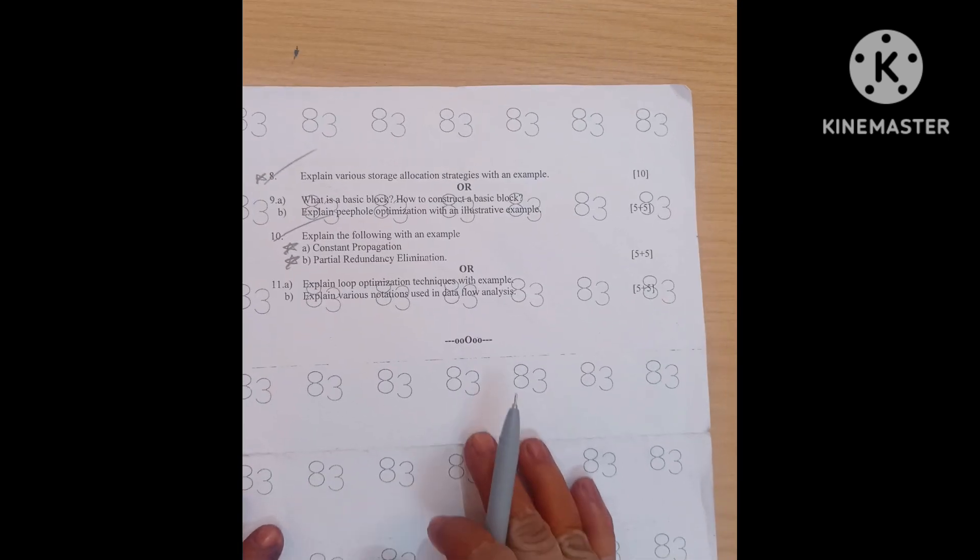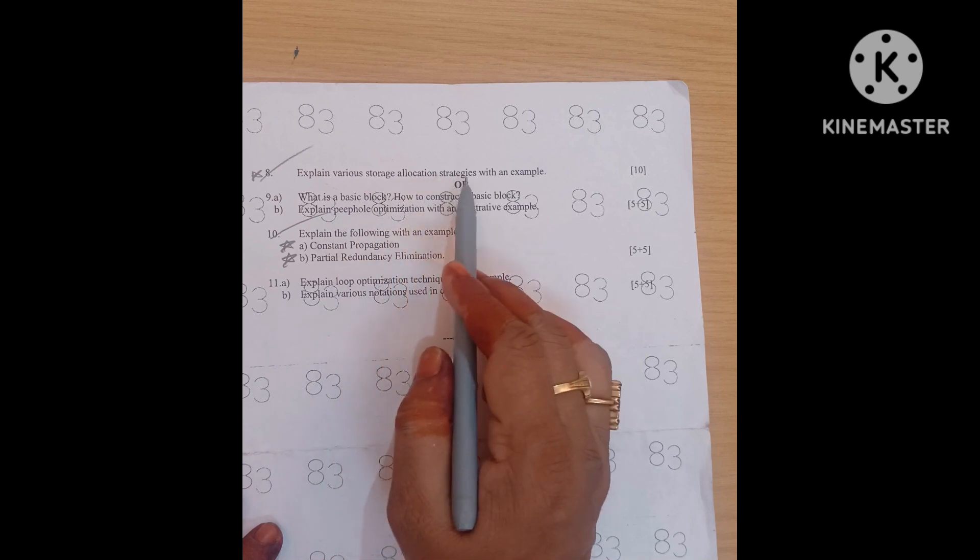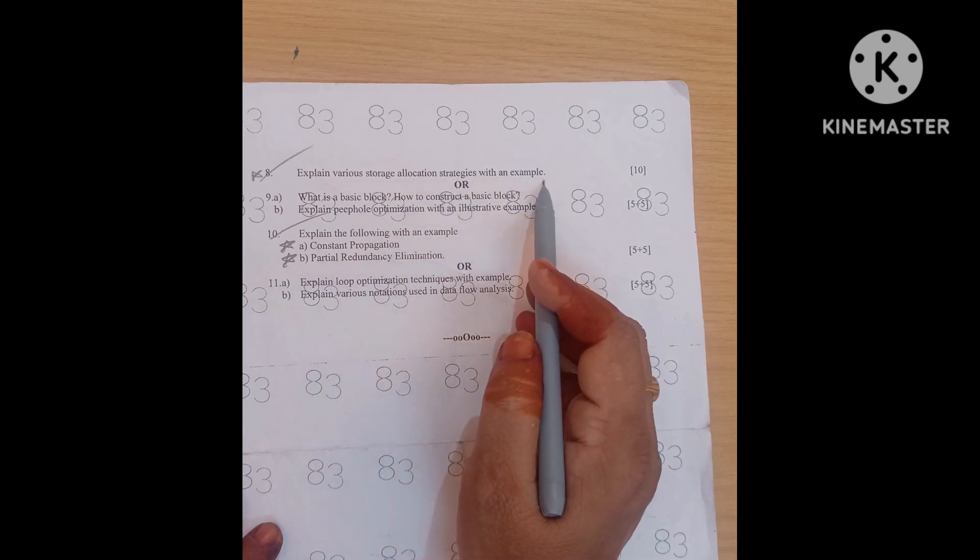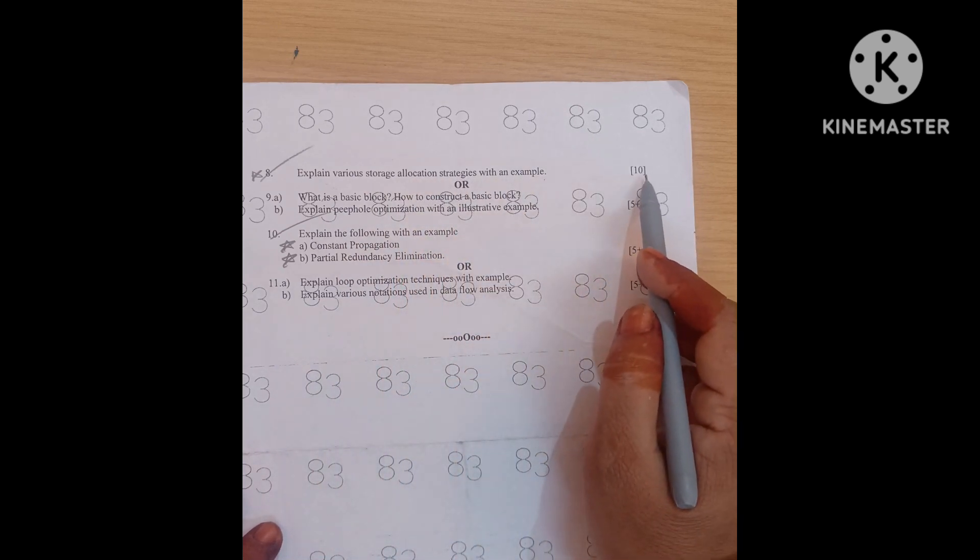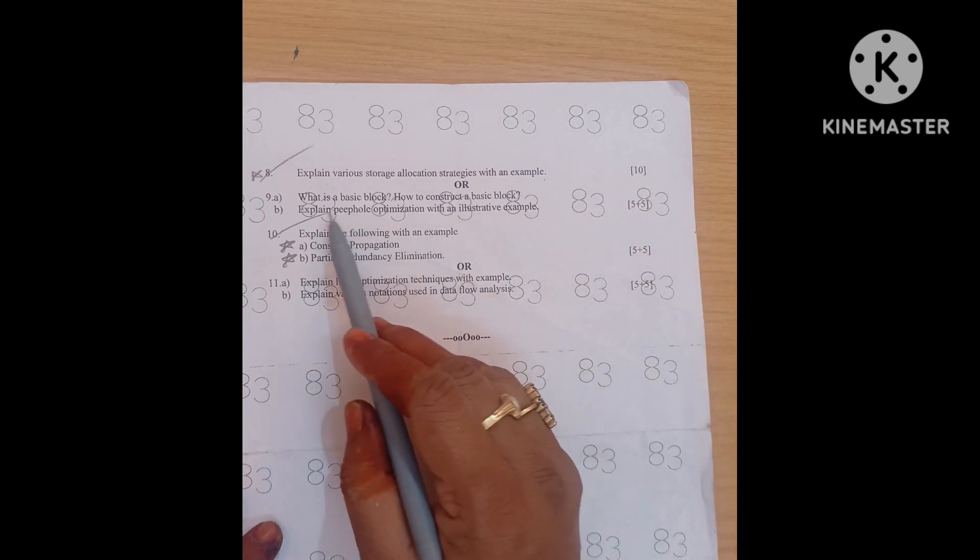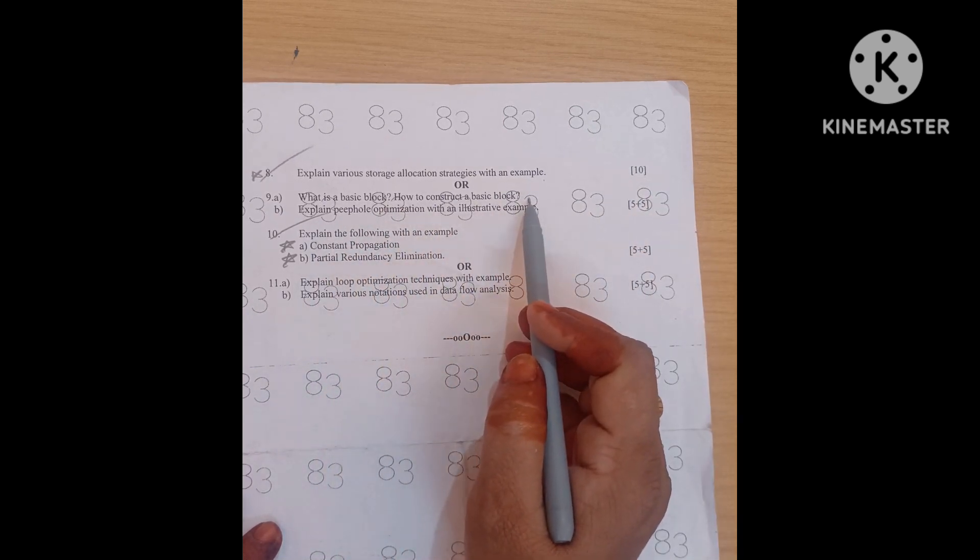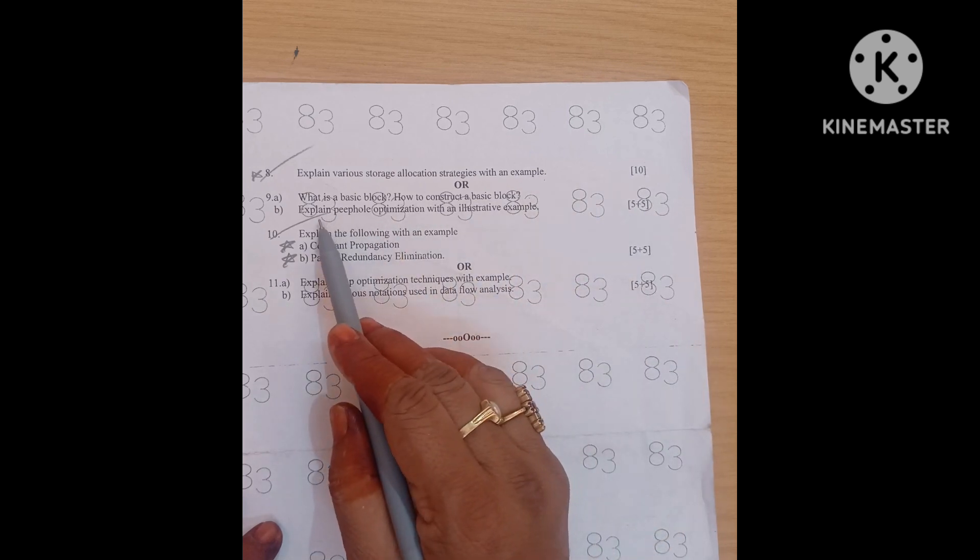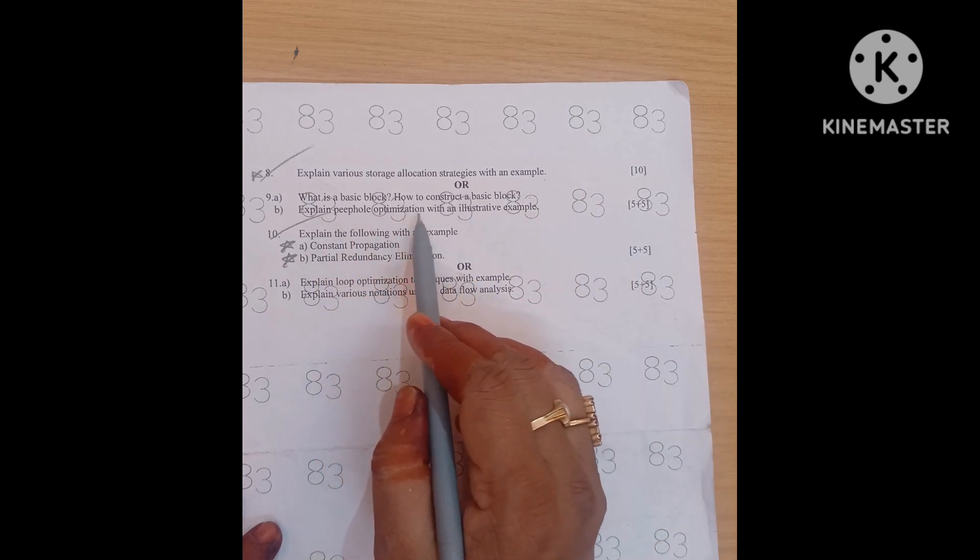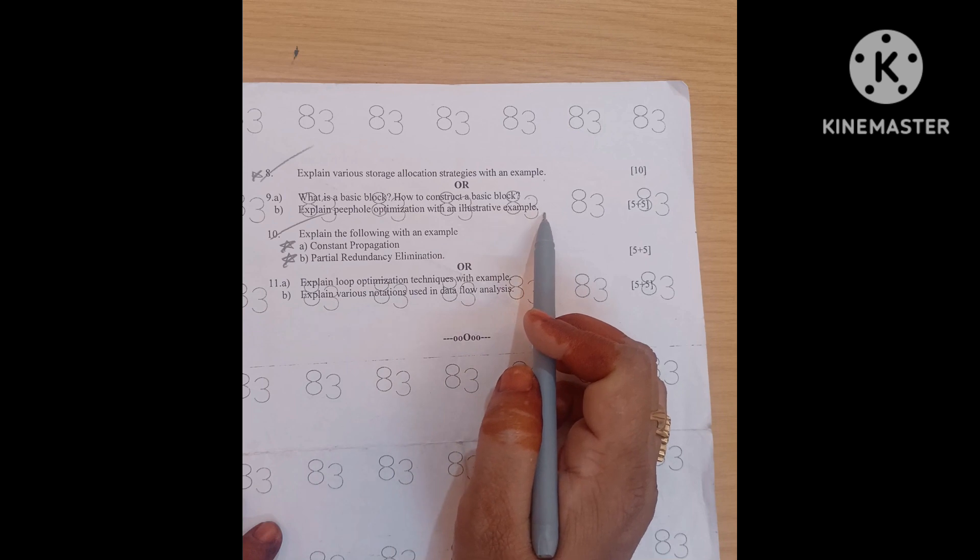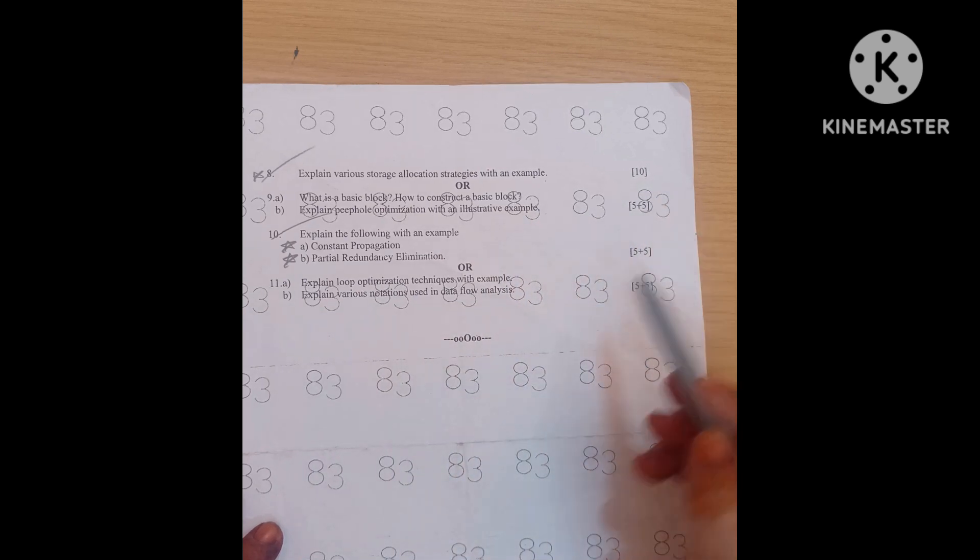And 7th question is give syntax directed translation scheme for simple desk calculator, direct question 10 marks. 8th question is explain various storage allocation strategies with an example. Write all the strategies, direct question 10 marks. What is basic block? How to construct a basic block? 5 marks question. Explain PFO optimization with an illustrative example, 5 marks question.